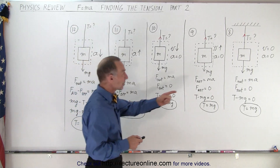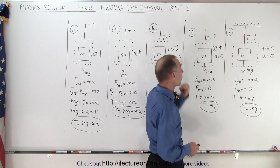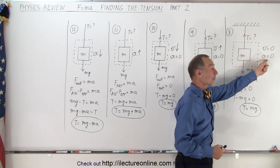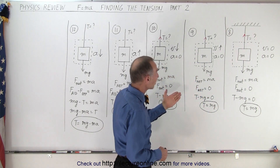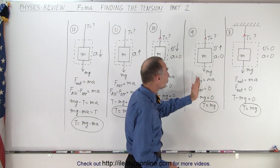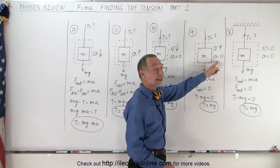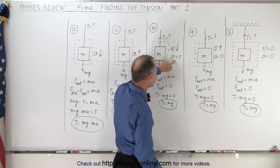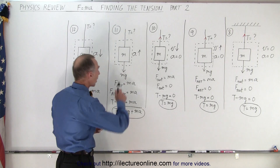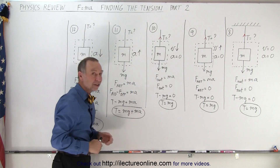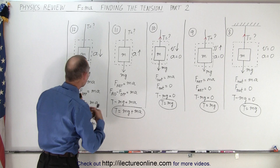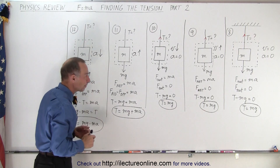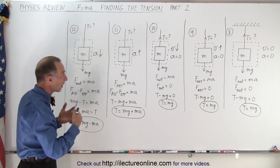In the first example here — this is example 8 because we're now on part 2 — we have an object just hanging there from a ceiling, not moving, so the velocity is constant and therefore there's no acceleration. In the second example, the object is being pulled upward at a constant velocity, no acceleration. In the third case, the object is allowed to go down at a constant velocity with no acceleration. In the fourth example, the object is being pulled up, accelerating at acceleration equal to a. And in the fifth example, the object is allowed to accelerate downward at acceleration a. So what is the tension in the string in each of these five examples?